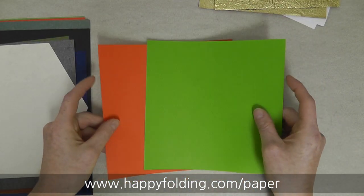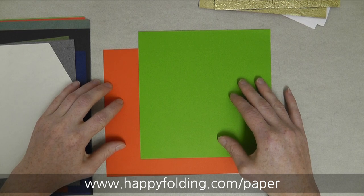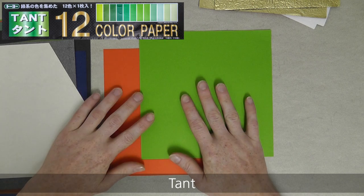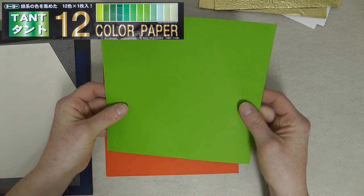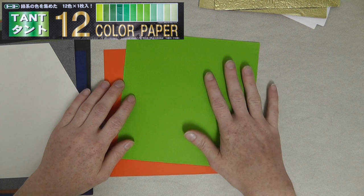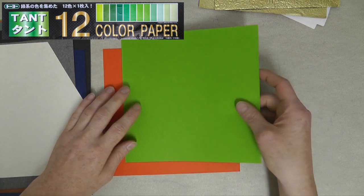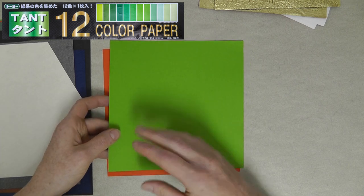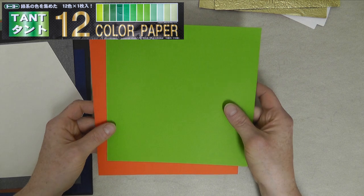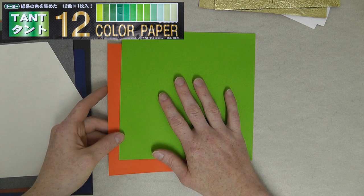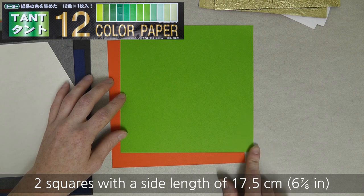Next up, also a paper that has been reviewed by Ilan Garibi and Gadi Vishne, which is Tant. Tant is beautiful paper. It has a very subtle texture and has no shine to it, which makes it great to photograph. And I think it's really beautiful to fold very many models from it. But because of the slight texture, I also do like using it for natural things, such as plants or animals. And here I'm including two squares with a side length of 17.5 cm.